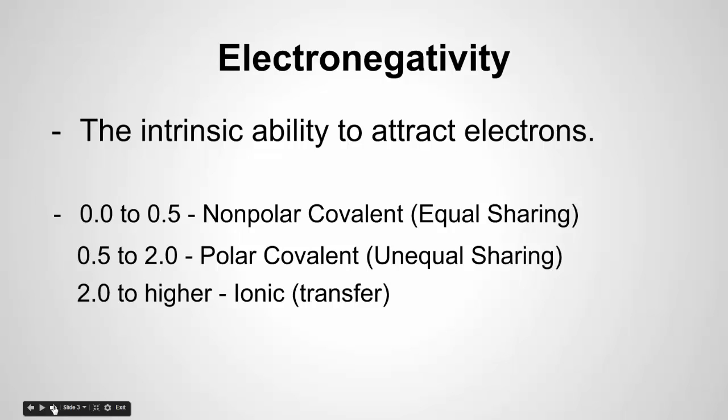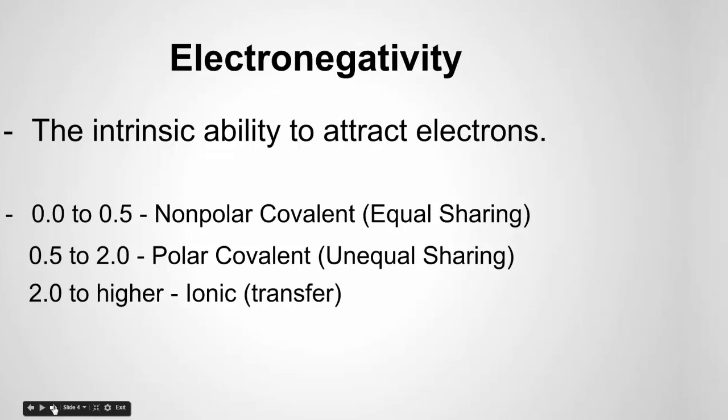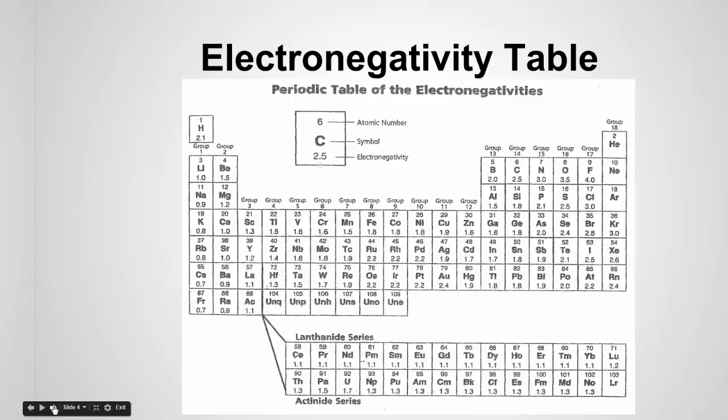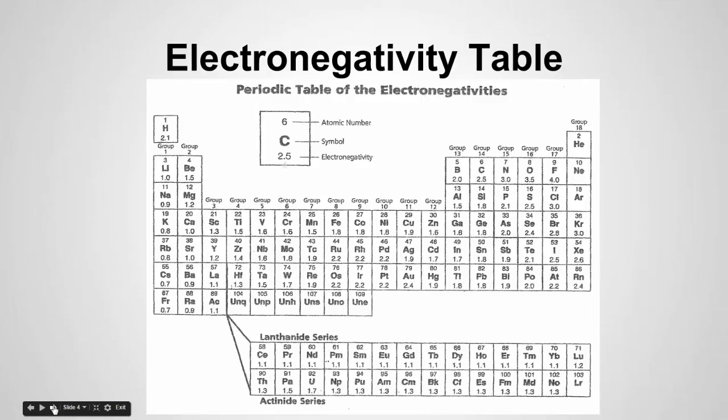So when an atom has polar influence in a bond, we often assign it a partial charge. And that's the next thing we're going to look at here. We saw that on one of the previous slides, that little delta. Before that, I just wanted to bring up the electronegativity table here. You can see these each have values assigned.